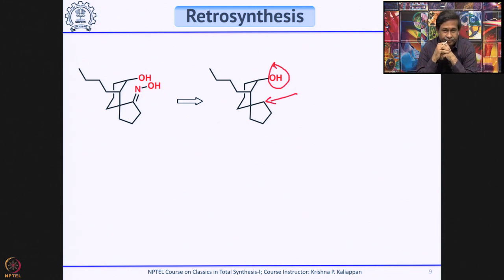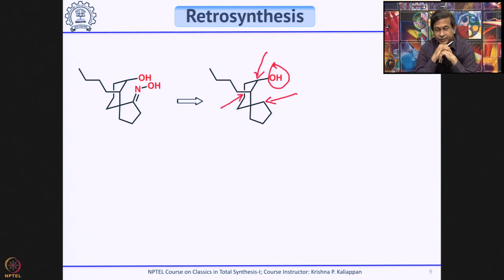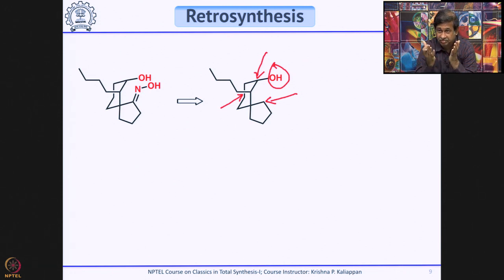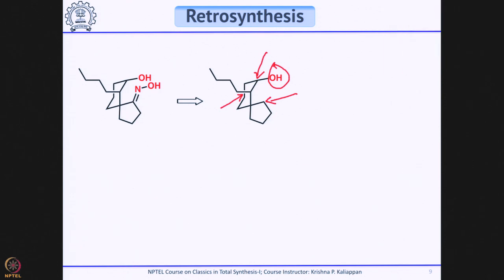The next step requires introducing a hydroxyl group and also the 4-carbon unit. These two groups are 1,2-related and trans to each other. Rather than starting from a ketone and reducing it — which may not be selective — the solution is hydroboration. When you do hydroboration-oxidation of a phenylcyclohexene, hydrogen and boron come from the same side (cis addition). The boron — which converts to hydroxyl — ends up opposite to the aryl group. The alkyl group and hydroxyl group are thus trans to each other.